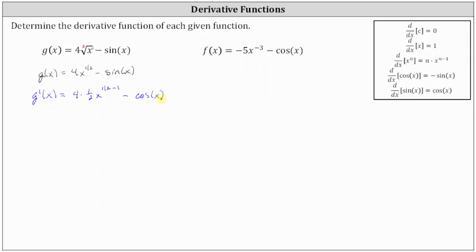Now let's go ahead and simplify. We have g prime of x equal to 4 times 1 half, which is 2, giving us 2 times x to the power of 1 half minus 1, which is negative 1 half. And then we have minus cosine x.